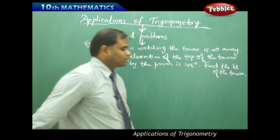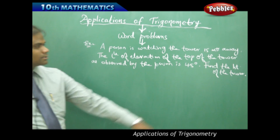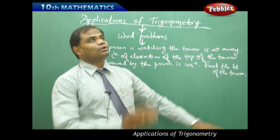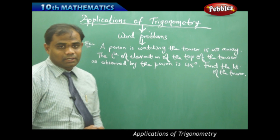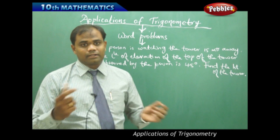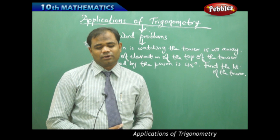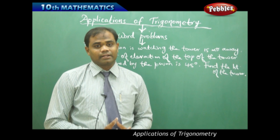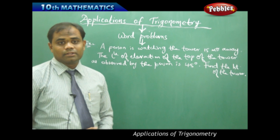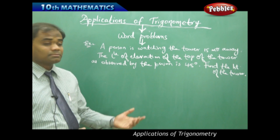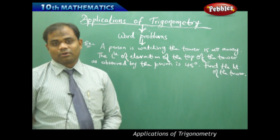The question is to find the height of the tower, where a person is watching from 15 meters away. Such word problems are usually converted into diagrams, and then we solve using the concept of right-angle triangles connected with trigonometric ratios. This is how the application of trigonometric ratios comes into existence for real-life problems.